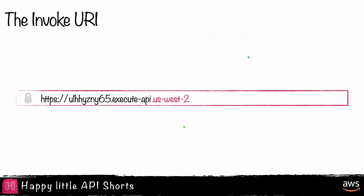The region is followed by the static domain value of amazonaws.com. This domain is the apex domain for all API Gateway hosted APIs.